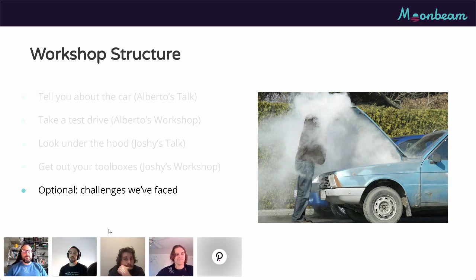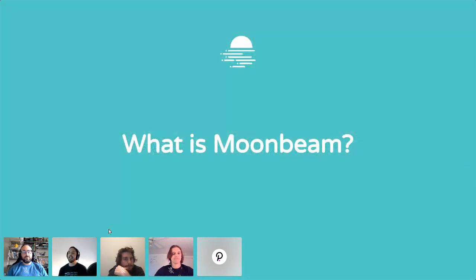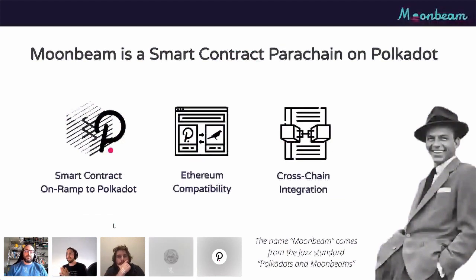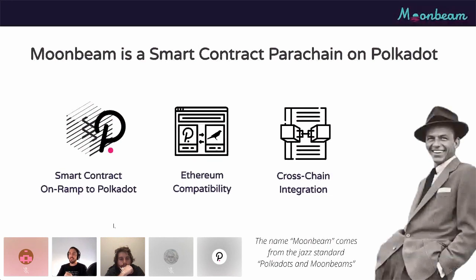So the first question we have to ask ourselves: what is Moonbeam? Moonbeam is a smart contract parachain on Polkadot. In the Polkadot architecture you have the relay chain, which does not support smart contracts — that implementation is left to the parachains. That's what Moonbeam is: we aim to be a smart contract platform as a parachain on Polkadot, with full Ethereum compatibility.